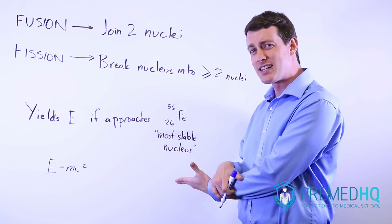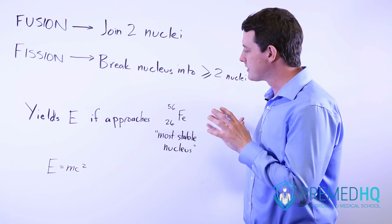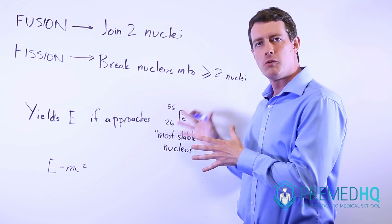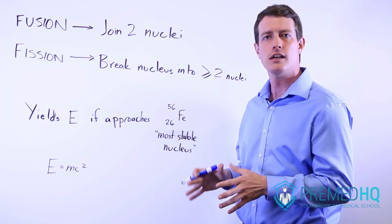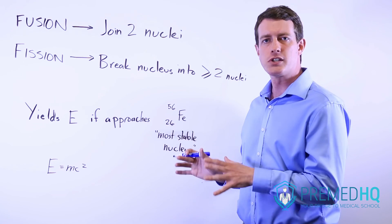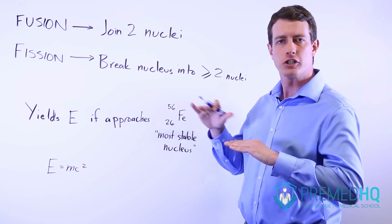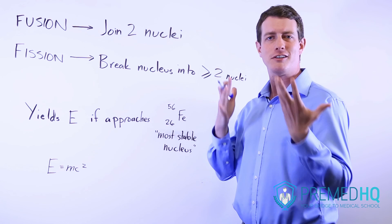The reason iron 56 is relevant here is because that is the most stable nucleus. It's not an important thing that they're going to test on the MCAT, but just realize that as things approach iron with a mass number of 56, you are going to be producing energy, whether it's by fusion of small nuclei or fission of larger ones.